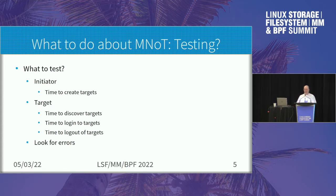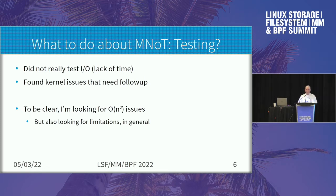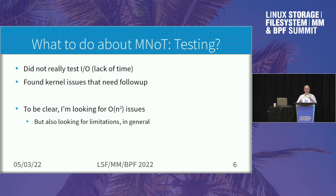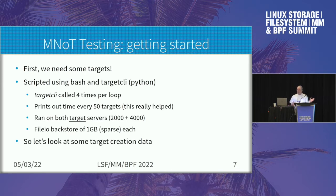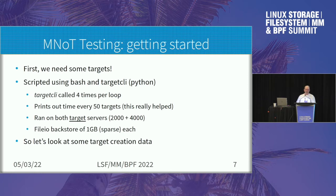I wanted to test the initiator and the targets to find where the bottlenecks are. I was trying to find the order N squared stuff. I did find some — I found some issues with kernel oopses, especially in older kernels, so I moved to a newer kernel. But the problem is that the script ran really, really slow. It ended up taking about 30 hours to create 2,000 targets. That's really not usable.